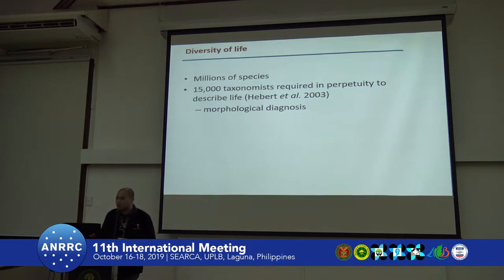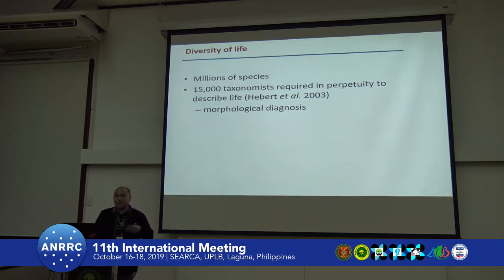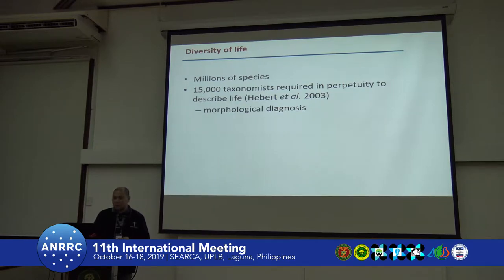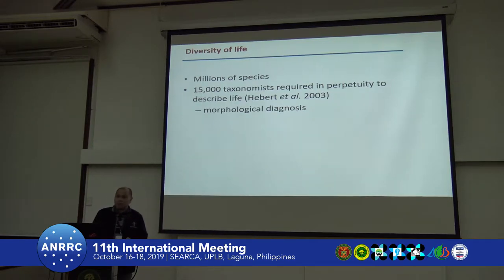We all know that there are millions of species. There is a debate as to how many species there are on Earth. In perpetuity, we need around 15,000 taxonomists that are required to study and describe life. And most of the time, we rely on morphological diagnosis.